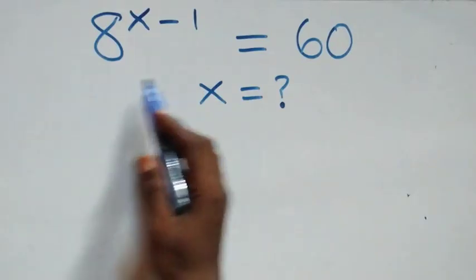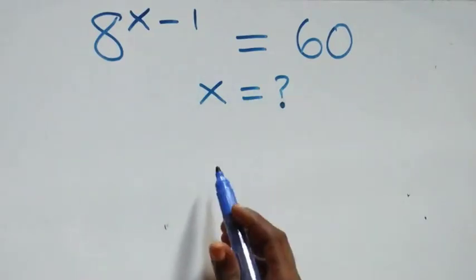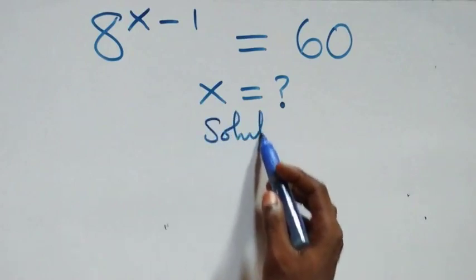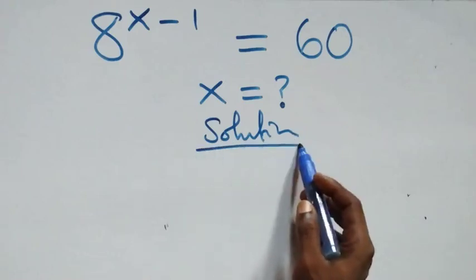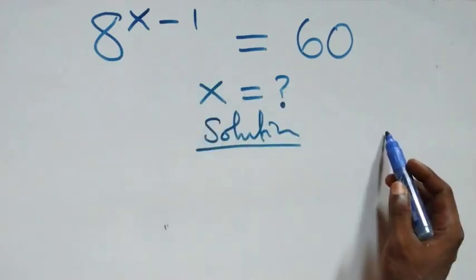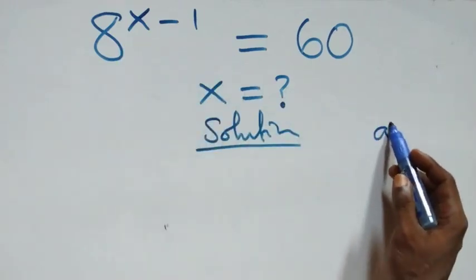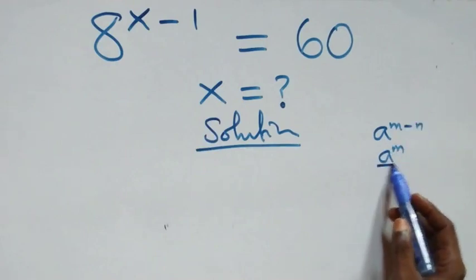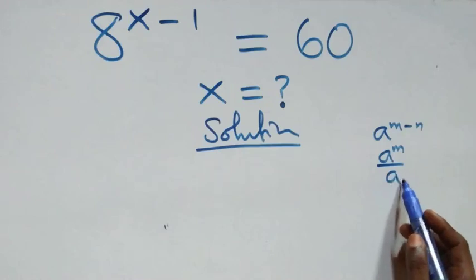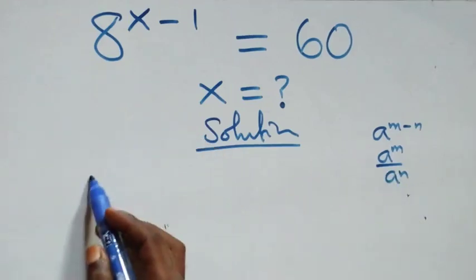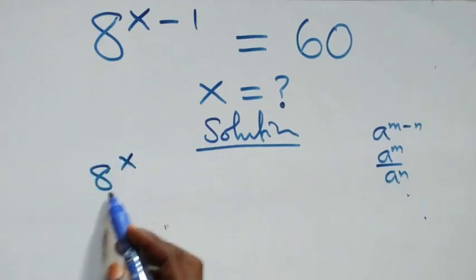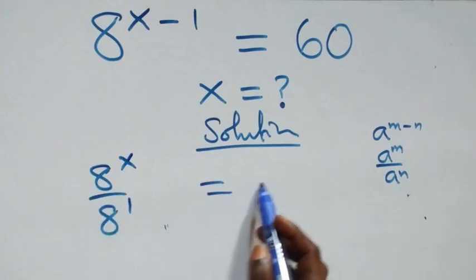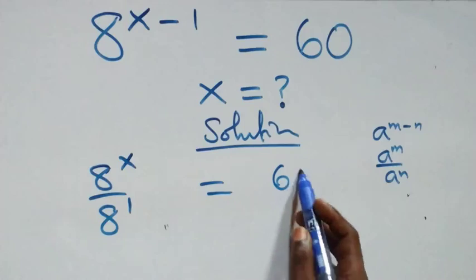Hello, welcome. Here we solve this exponential equation. What we have here follows from the law: a raised to power m minus n is the same as a raised to power m over a raised to power n. We can write this as 8 raised to power x over 8 raised to power 1, equals 60.